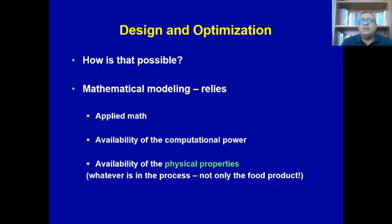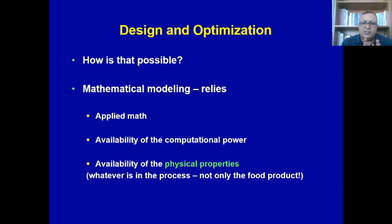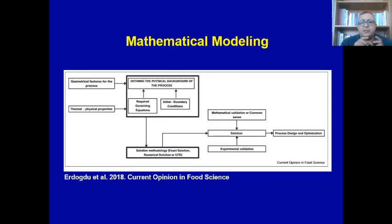How is that possible? Through a mathematical modeling approach relying on applied mathematics and significant computational power. For example, in our collaborative study with a partner group, a recent simulation of just five minutes of process time in a shaking retort took more than one year on a very powerful computer. So available thermophysical properties, available computational power, and knowledge of the process system itself are all required inputs for design and optimization of these innovative processes.